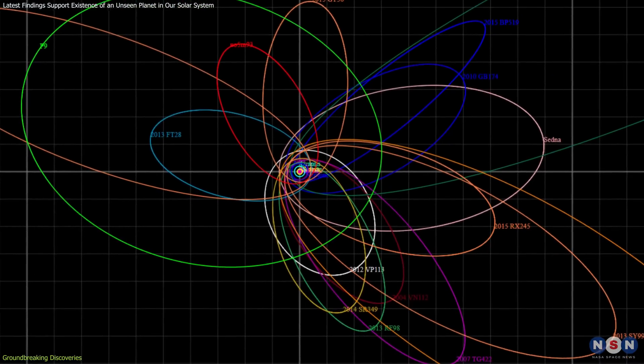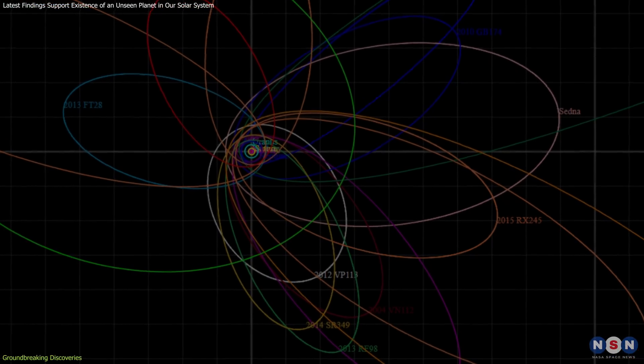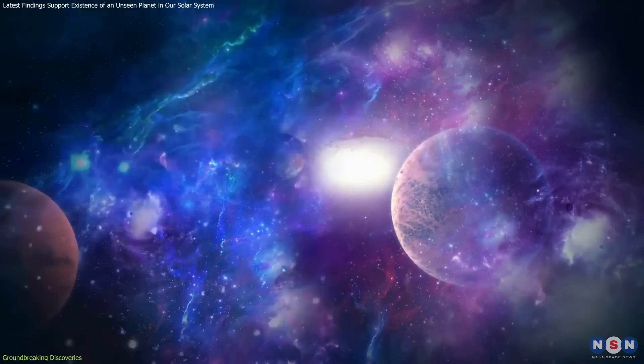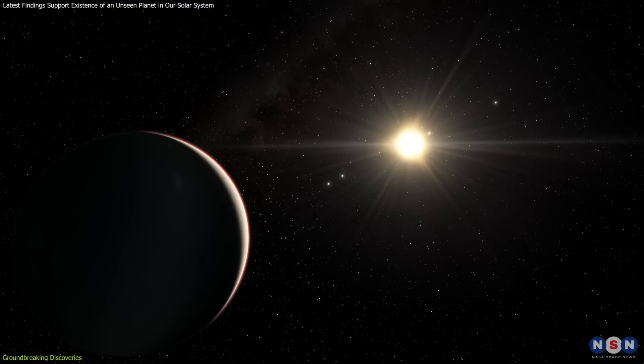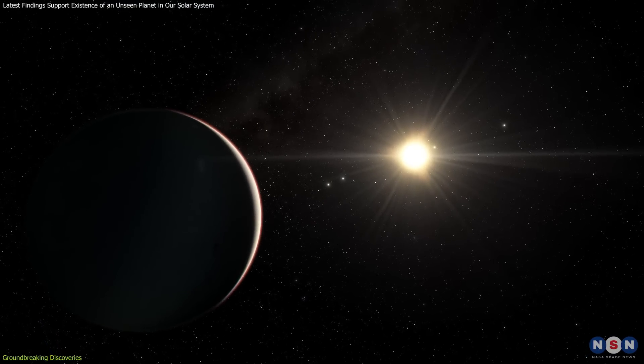exhibit orbits that are highly elongated and tilted in such a way that they cannot be easily explained by the gravitational influence of known planets. The hypothesis of an additional planet, lurking unseen in the distant reaches of the solar system, offers a tantalizing explanation.